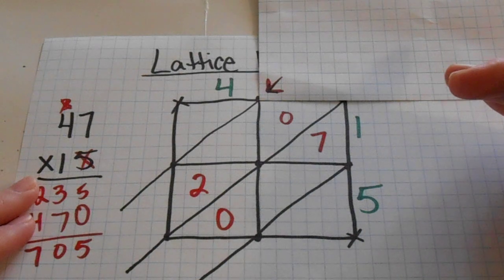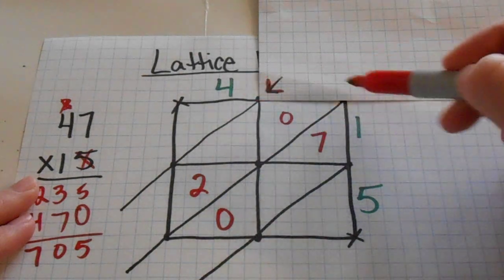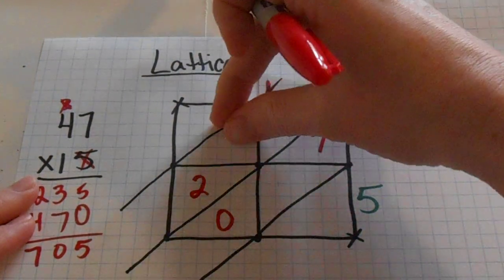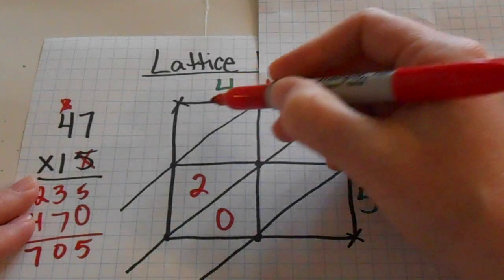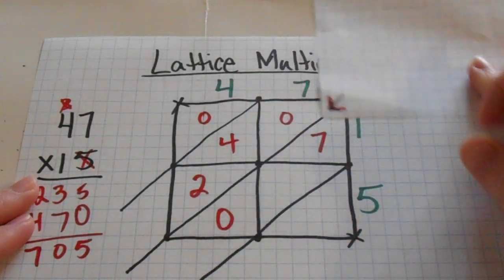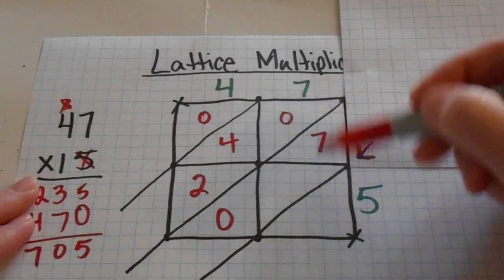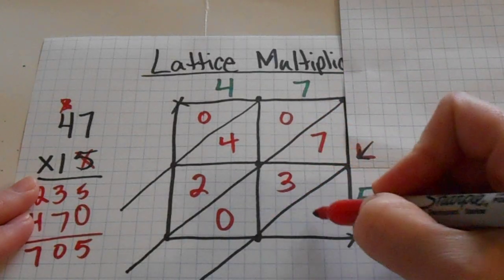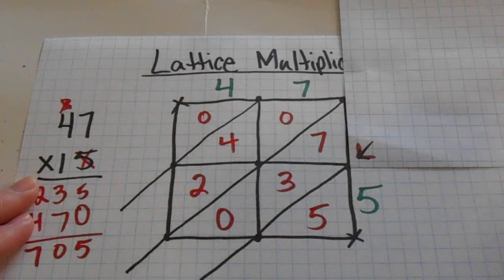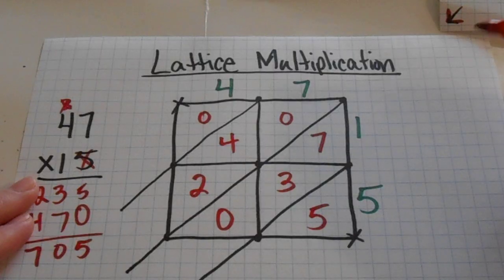At this point you can use the paper if you still need to. I've got 4 times 1. They're going to go in this box right here. 4 times 1 is 4. And then down here I've got 7 times 5. 35 goes there. Now I'm done with my multiplication.